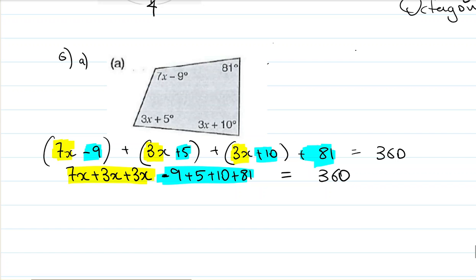Alright, so those are my constants. You see how you put them together like that? They look nice and neat. Alright, 7x plus 3x is 10x, plus 3x is 13x. So I've got 13x. Now this I'm just going to put in my calculator. Don't forget that negative 9 is a minus. Negative 9 plus 5 plus 10 plus 81. 87, 87 positive. So I'll write plus 87 equals 360.